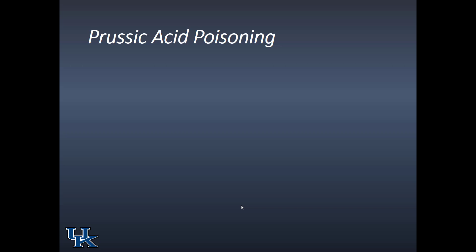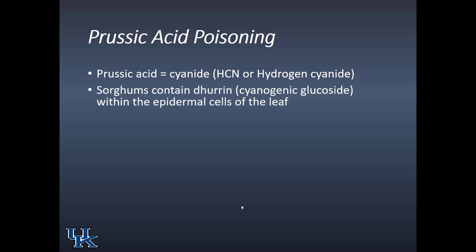Now let's switch to prussic acid poisoning. Prussic acid is cyanide — HCN, or hydrogen cyanide. It gets its name because cyanide was isolated from a dye called Prussian blue, hence prussic acid. Sorghums contain dhurrin, which are cyanogenic glycosides within the epidermal cells of the leaf. The significance of that location will become clear in just a moment.